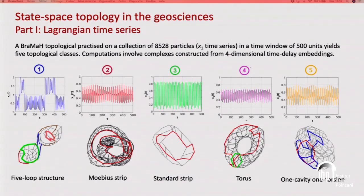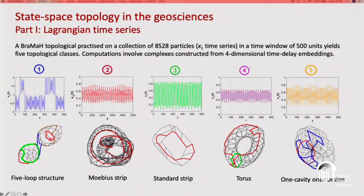This is a BRAMA topological analysis practiced on a collection of 8,500 particles. What you see above is the time series of horizontal position x_1 in a time window of 500 units. All 8,000 of these time series can be classified into five topological classes: a five-loop structure, a Möbius strip, a standard strip, a torus, and a structure that has one cavity and one torsion.